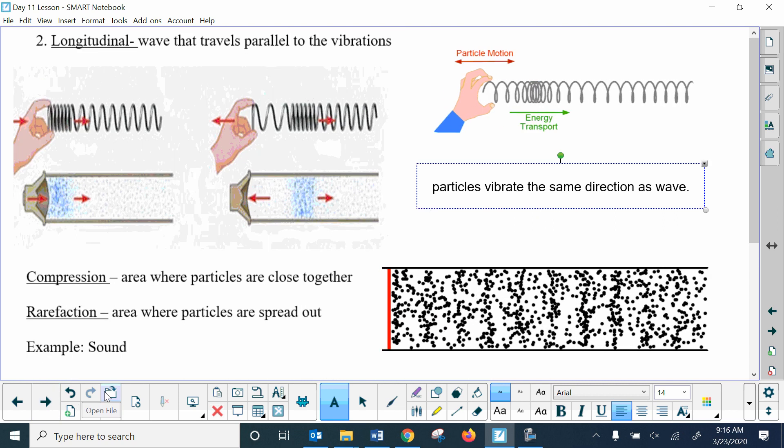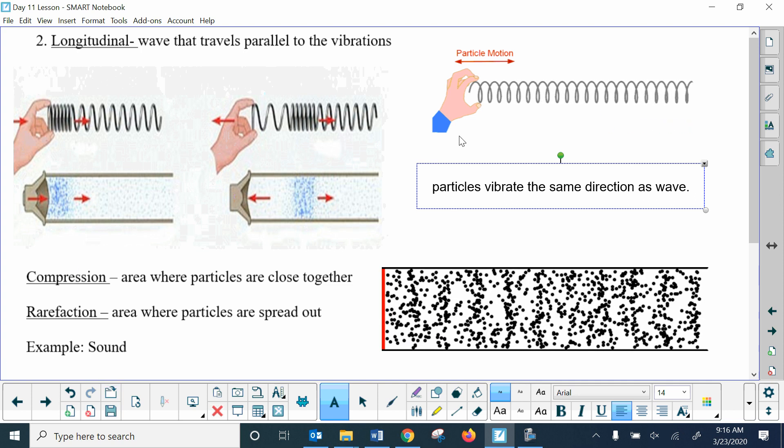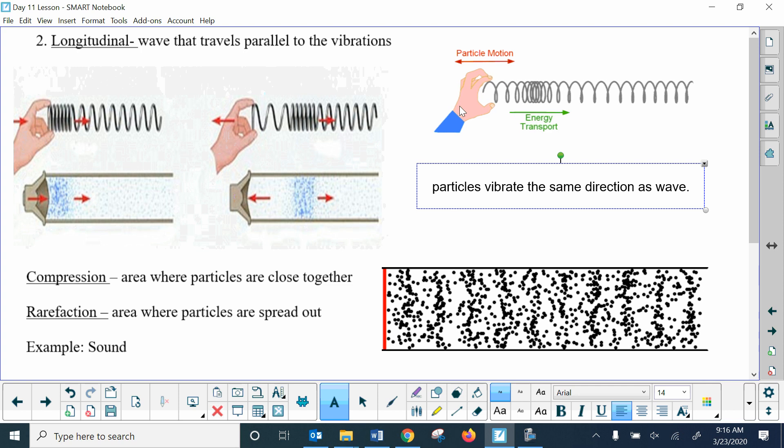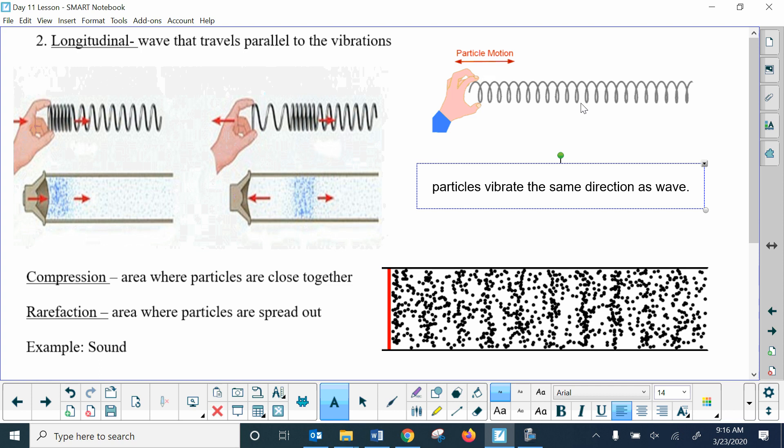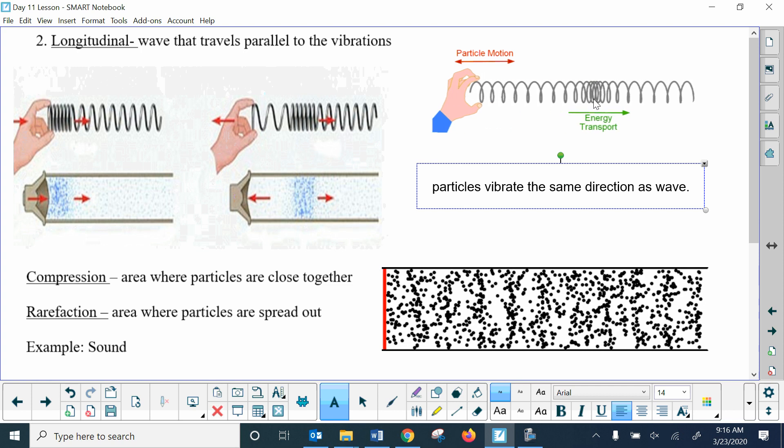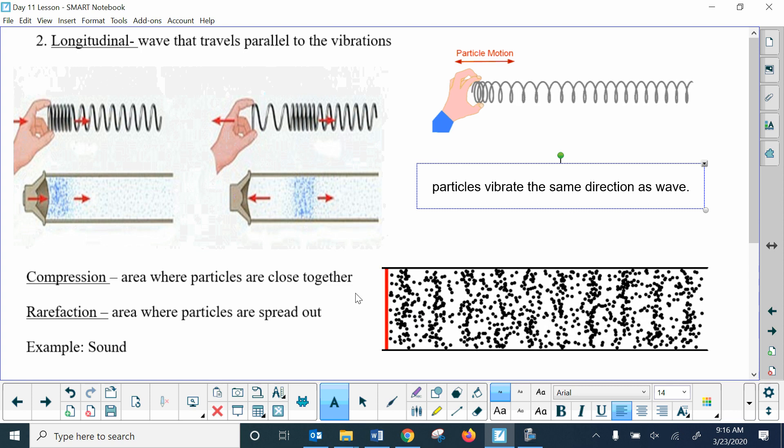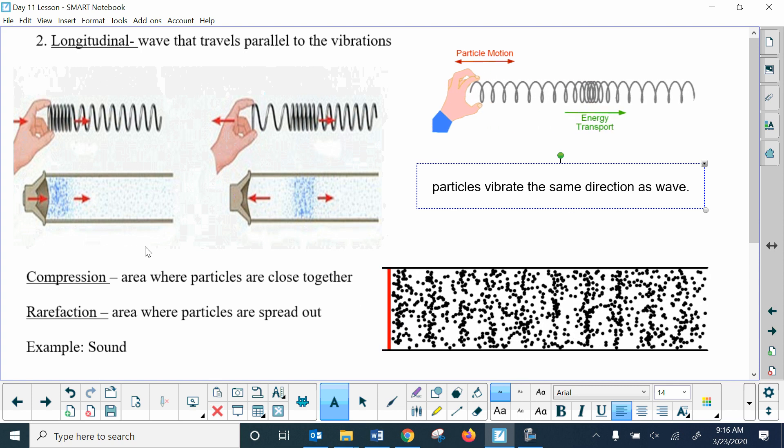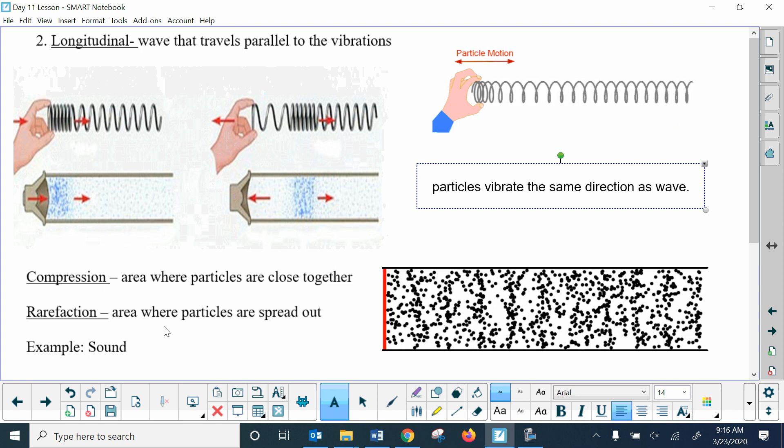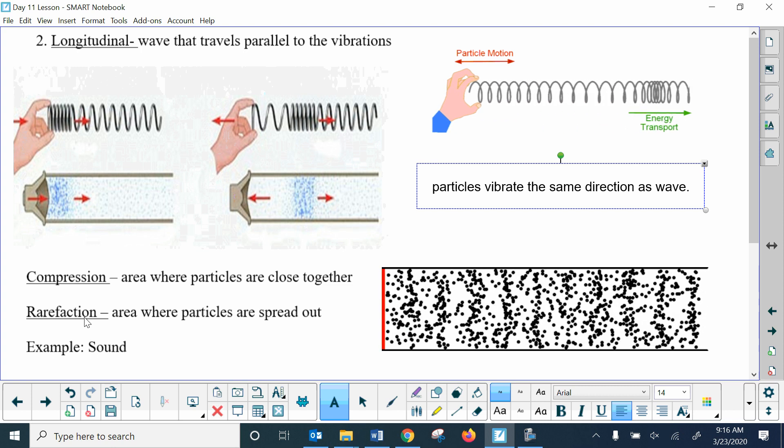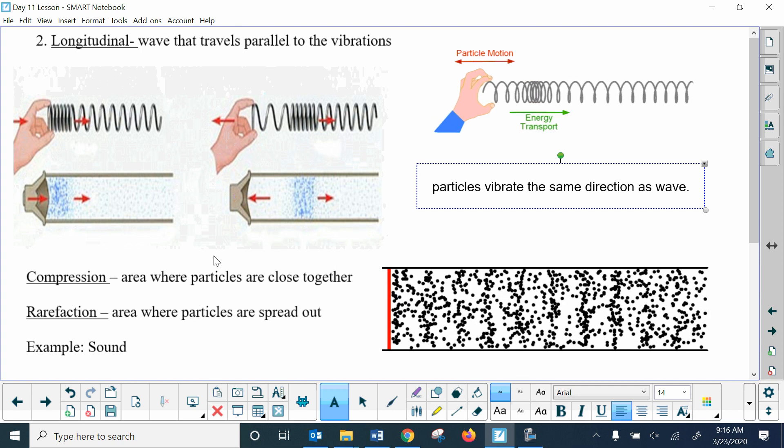Longitudinal waves are waves that travel parallel to vibrations. If you look at the diagram, you're moving your hand left to right. The vibration is going in the same direction as the energy of the wave or the wave motion. The wave is carrying the energy to the right, and the particles are shifting back and forth left to right. Instead of having crests and troughs, they have compressions, which are areas where particles are close together, and rarefactions are areas where the particles are spread out. These are also sometimes known as compression waves instead of longitudinal, but longitudinal is generally the terminology I use.